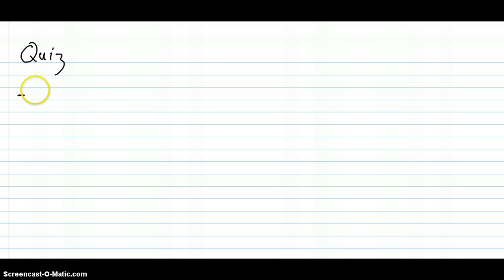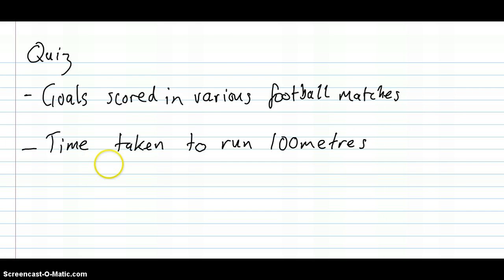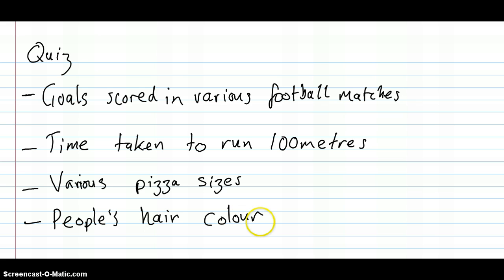Okay, just to check that we've understood these different categories of data, let's look at a few examples. Okay, goals scored in football matches, the time taken to run 100 meters, various pizza sizes, and people's hair color. Now you may wish at this point to pause the video and see if you can work each one of these out, so pause the video now if you like.